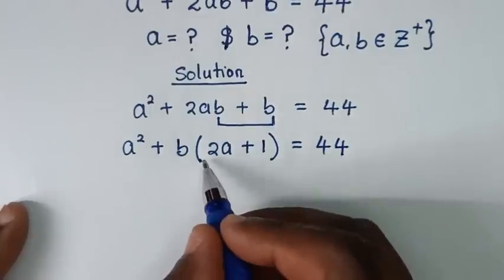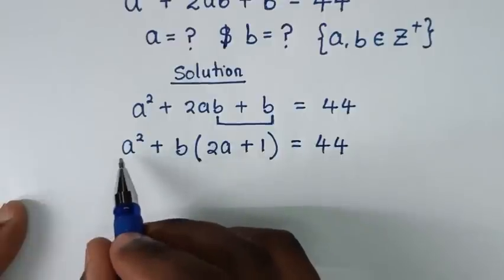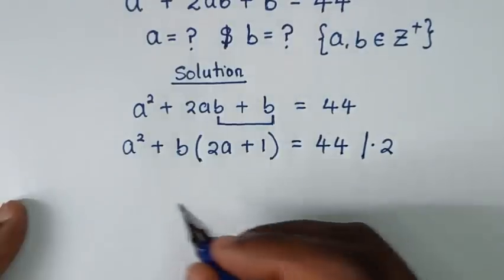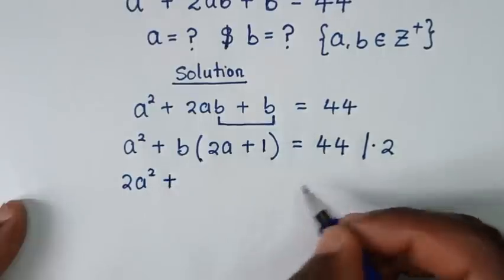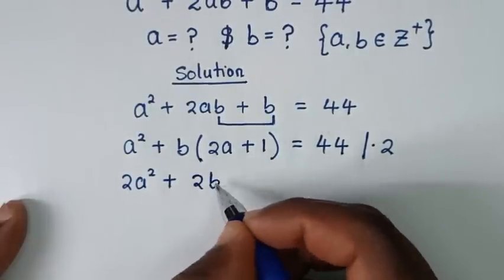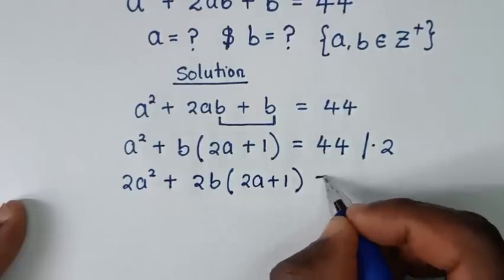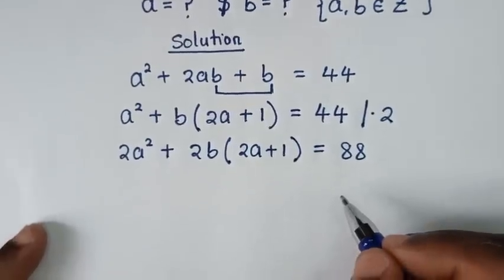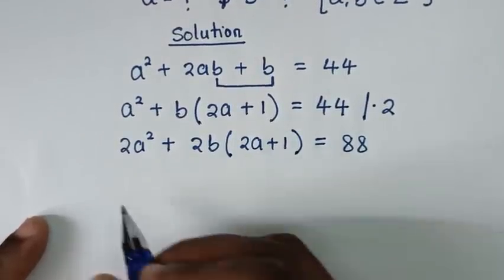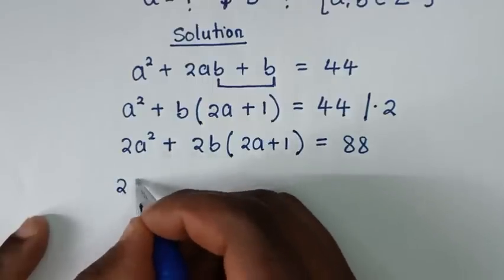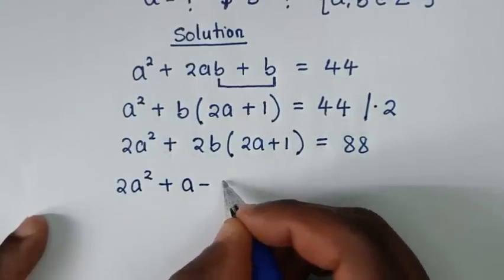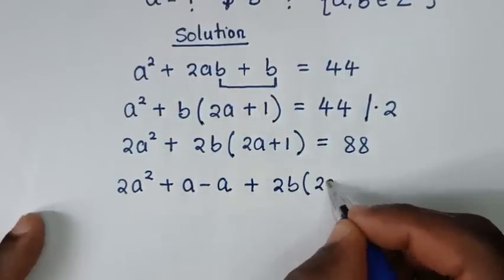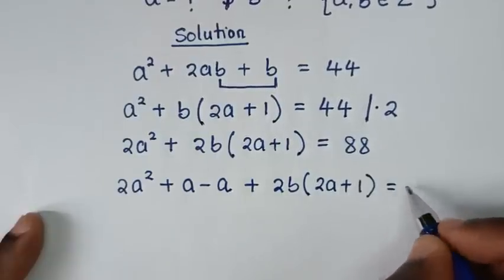In the next step, we want to make the form 2a plus 1 appear. So we multiply the whole equation by 2. That gives 2a squared plus 2b bracket 2a plus 1 bracket equals 44 times 2, which is 88. Then from 2a squared we add and subtract a, giving a bracket 2a plus 1 bracket plus 2b bracket 2a plus 1 bracket, equals 88.